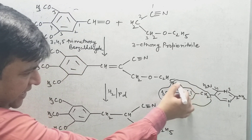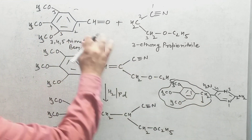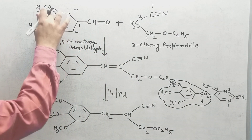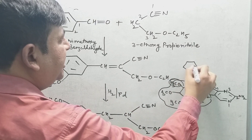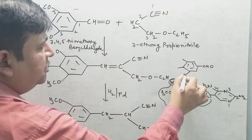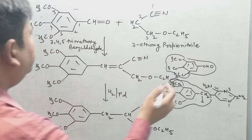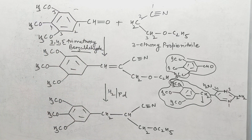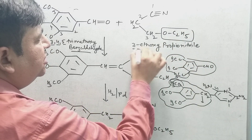We will start with the starting material: 3,4,5-trimethoxybenzaldehyde. This is benzaldehyde — benzene with a CHO group — with OCH3 groups at the 3, 4, and 5 positions. This benzaldehyde then reacts with 3-ethoxypropionitrile.